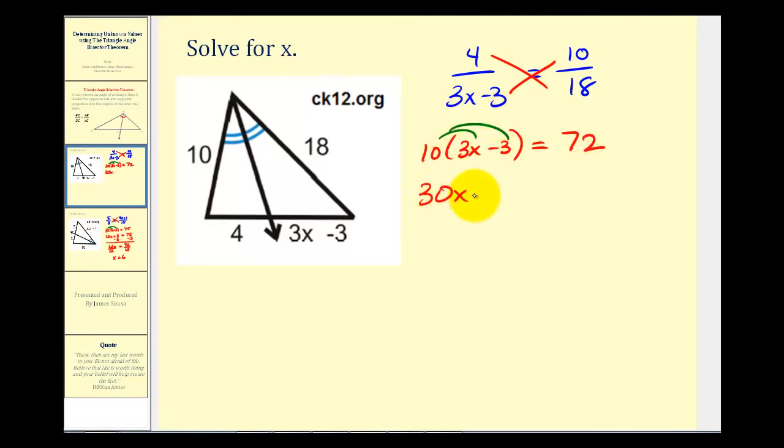So we have 30X minus 30 equals 72. So let's add 30 to both sides. So we have 30X equals 102. Divide by 30.